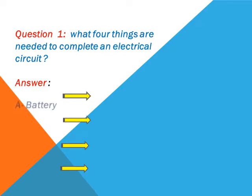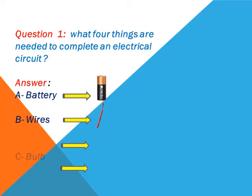The answer: number A, battery. Number B, wires. Number C, bulb.